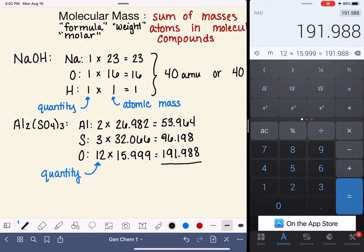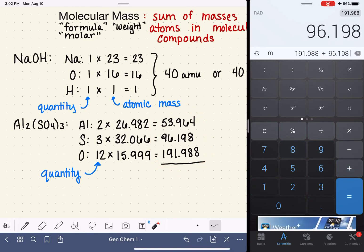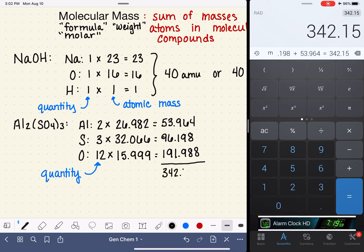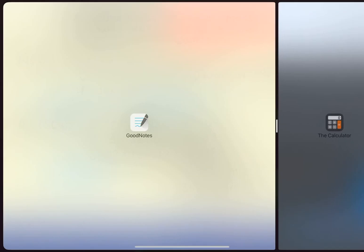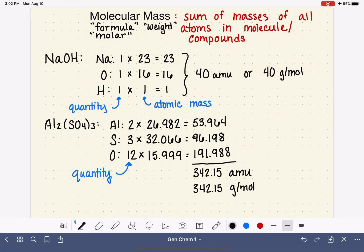And then we add all of these up together. So we're going to add these three together: 96.198 and 53.964. And we get a total of 342.15, and your units are going to be either AMU or grams per mole, depending on how you are going to go about using the number. So again, both of those units are equivalent, and you'll just choose the appropriate unit based on the type of problem that you're solving.